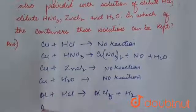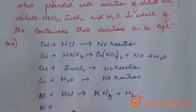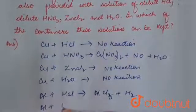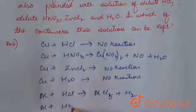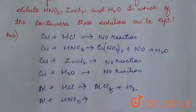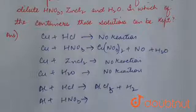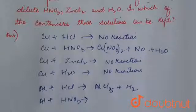Reaction of aluminium with nitric acid: when nitric acid is stored in an aluminium container, it forms a protective layer of aluminium oxide, which makes it passive towards the acid. So nitric acid can be stored in the aluminium container.